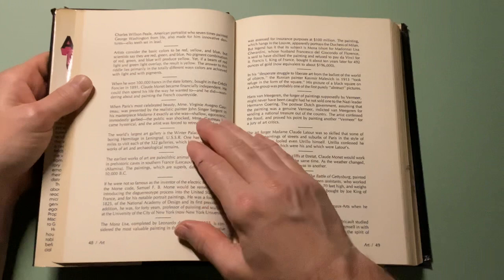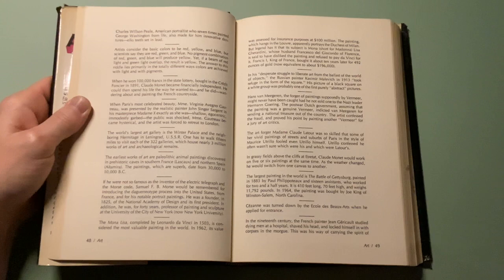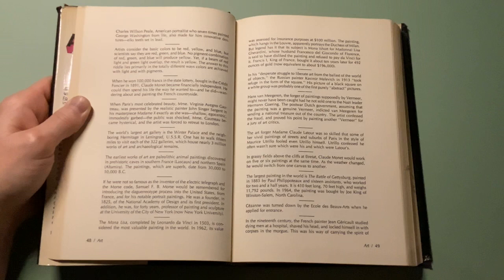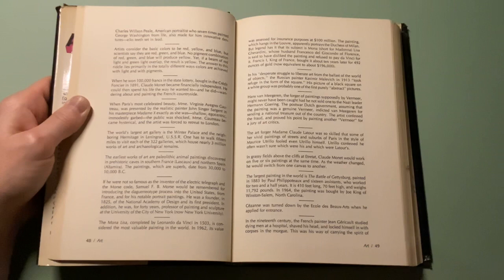Artists consider the basic colors to be red, yellow, and blue, but scientists say they are red, green, and blue. No pigment combination of red, green, and blue will produce yellow. Yet if a beam of red light and green light overlap, it results in yellow. The answer to this riddle lies primarily in the totally different ways colors are achieved with light and with pigments.